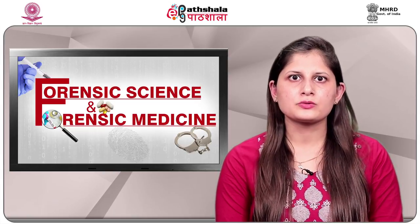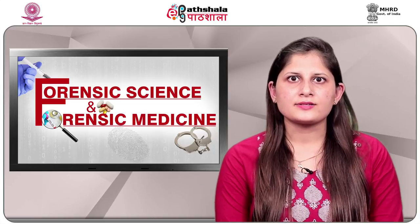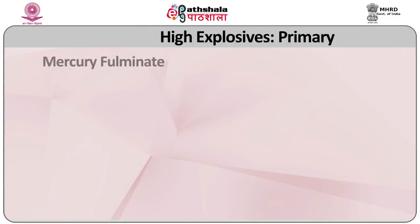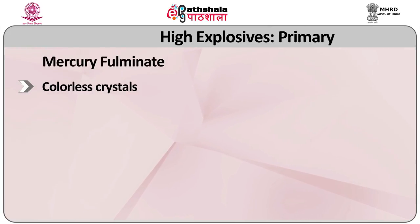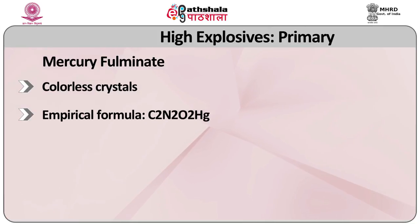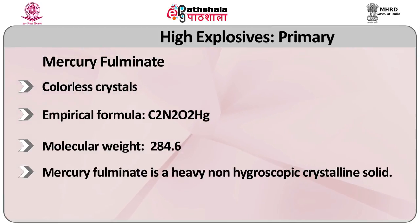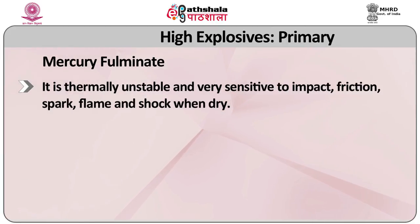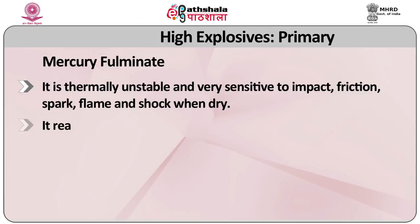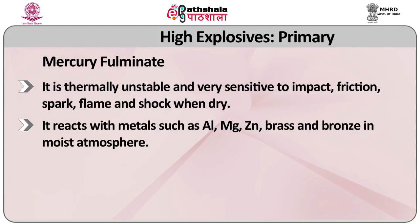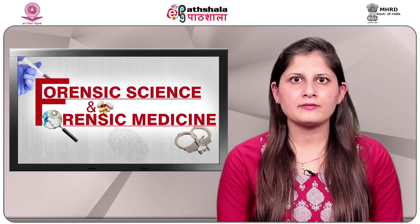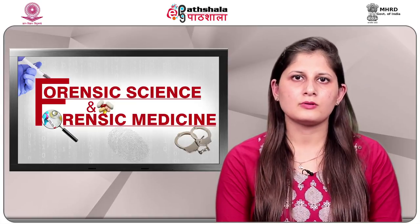Initiators are mainly used in military detonators, industrial blasting caps, and shock primers. Mercury fulminate: it is colorless crystals. Empirical formula is C2N2O2Hg. Molecular weight 284 grams. Mercury fulminate is a heavy non-hygroscopic crystalline solid. It is thermally unstable and very sensitive to impact, friction, spark, flame, and shock. When dry, it reacts with metals such as arsenic, aluminium, magnesium, zinc, brass, and bronze in a moist atmosphere. Being a mercury derivative, it is a toxic compound, practically insoluble in water.